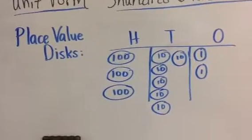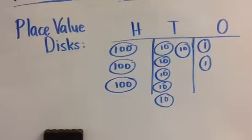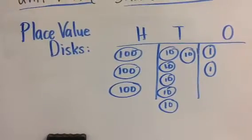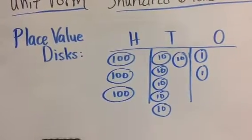The final way that we've seen so far is place value disks. We are representing the disks that we've used in class by circling either 100, 10, or 1.